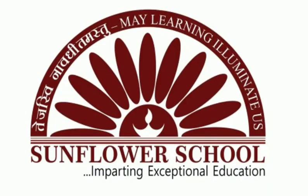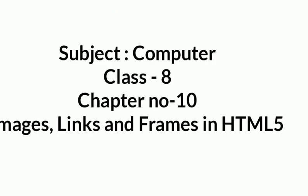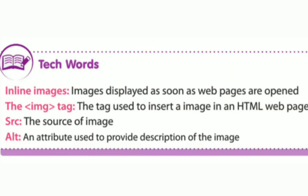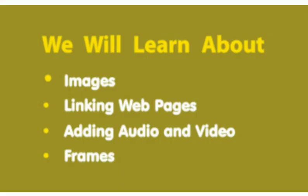Good morning students, welcome to computer class. Today we are going to start chapter number 10: Images, Links and Frames in HTML. Let's start with key terms. Inline images are displayed as soon as web pages are opened. The image tag is used to insert images in HTML web pages. SRC means source — where the image is taken from. ALT is an attribute used to provide a description of an image when you move your cursor over it.